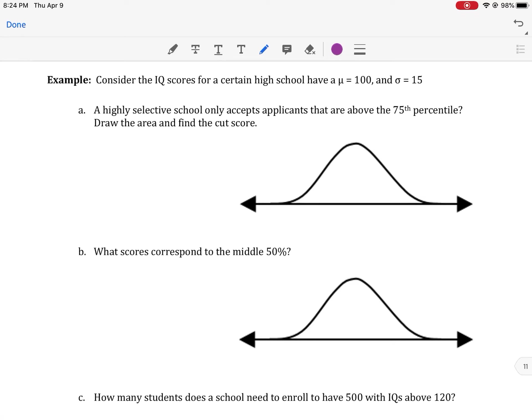Okay, let's look at the next part. This one, consider IQ scores for a certain high school have a mean of 100 and a standard deviation of 15. A highly selective school only accepts applicants that are above the 75th percentile. Think back to our box and whisker plots. Remember, 75th percentile means the area below this number is 75% or the area to the left of this number is 75%. So here we're saying, our mean is 100 and 75% is going to be above the mean. In this case, if this is 75%, what is that cutoff? So as you might think, we're going to use the inverse normal.